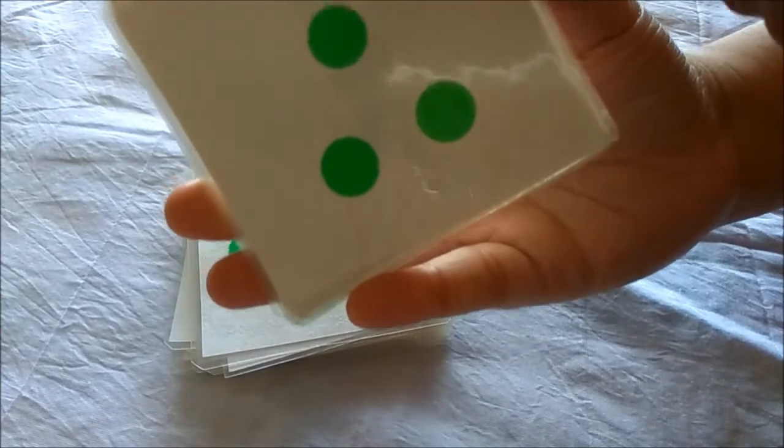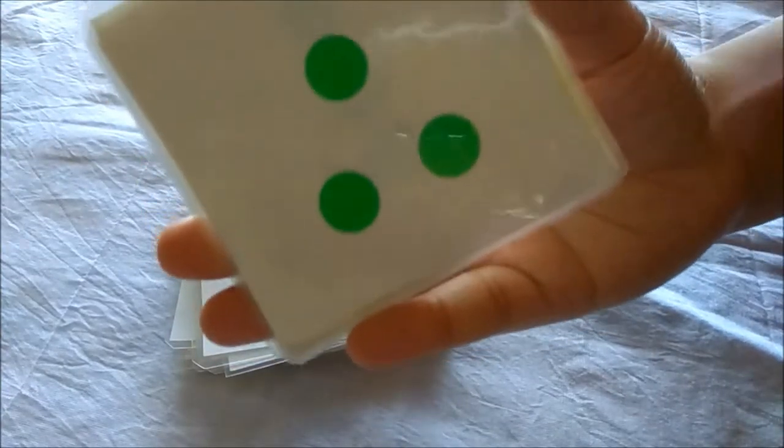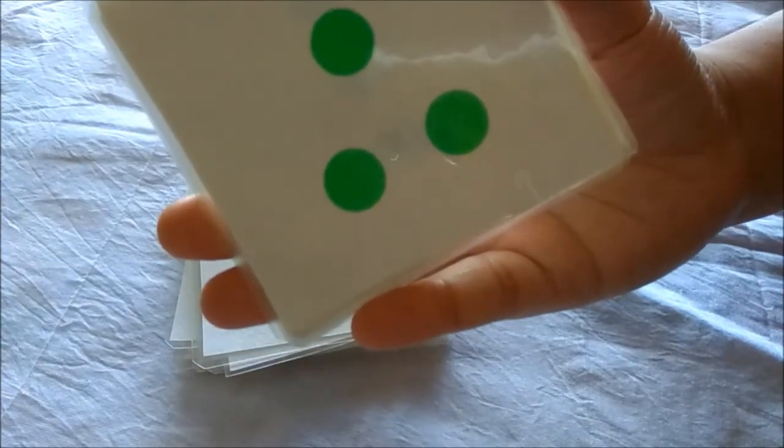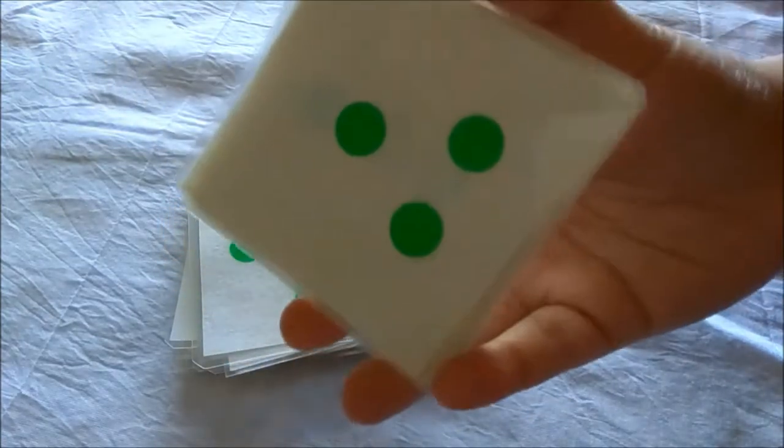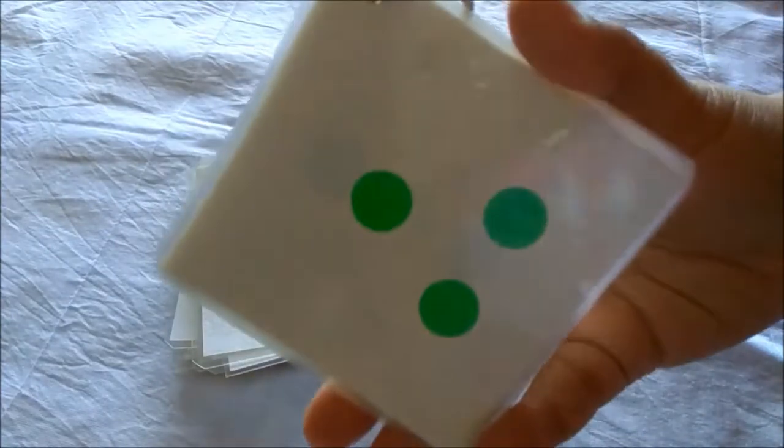First step, he will have to identify the number that is on the flash card. Then he will have to think one more number and then tell you the answer. So that will be number 4. You can do variations in these activities with the same set of flash cards.